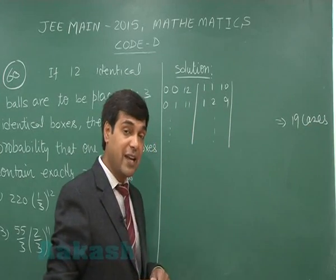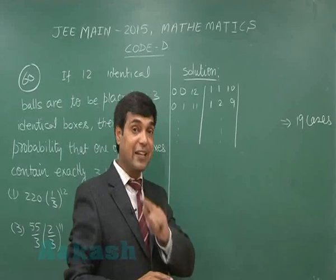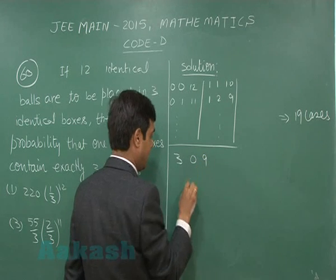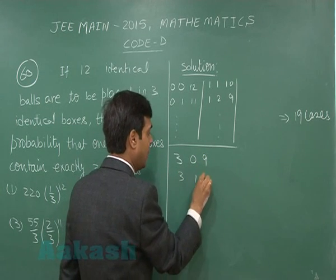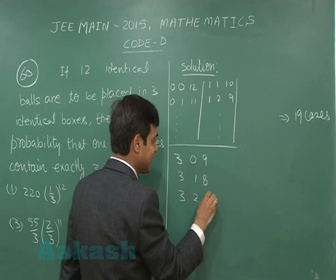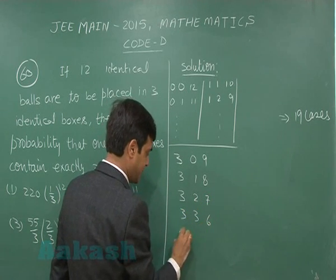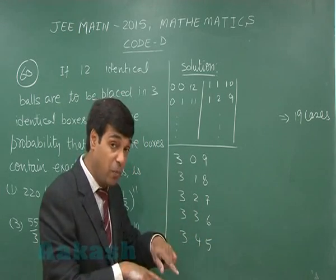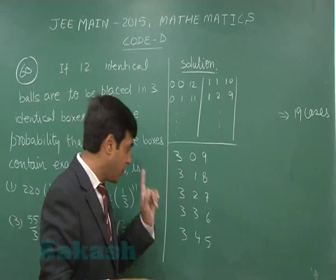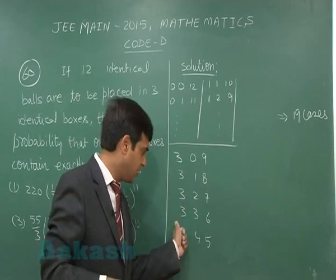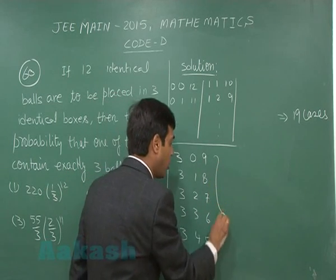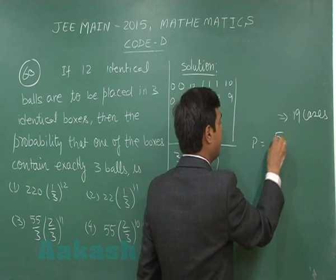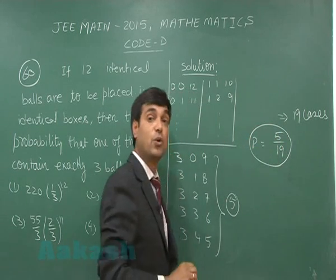Now, the favorable cases are those where one box has exactly 3 balls: (3,0,9), (3,1,8), (3,2,7), (3,3,6), (3,4,5). The question says one box has exactly 3 balls — not exactly one box — so (3,3,6) is also a valid possibility. The favorable cases total 5, giving a probability of 5/19, which is not among the given options.